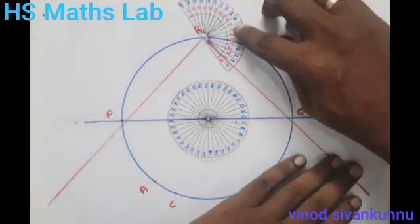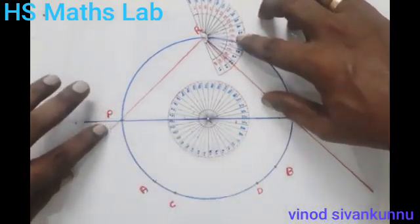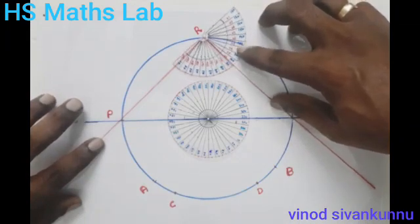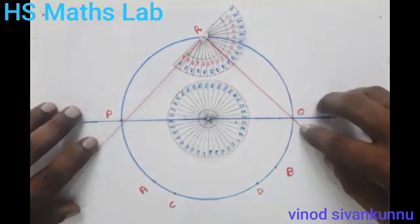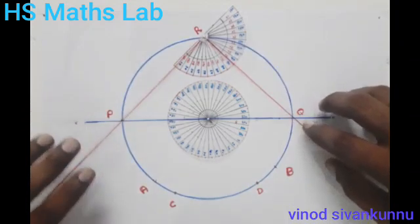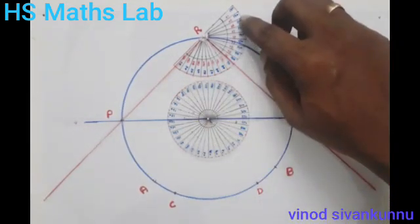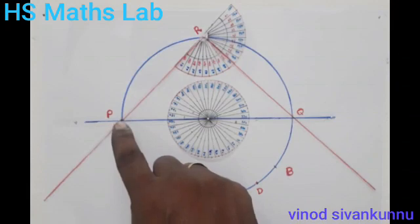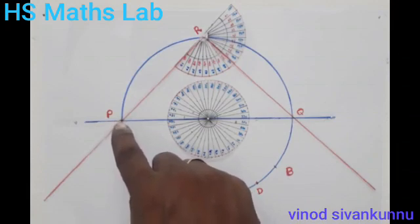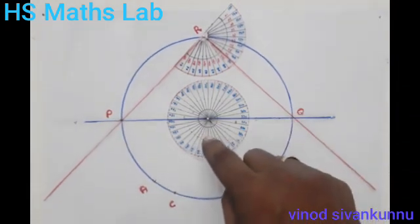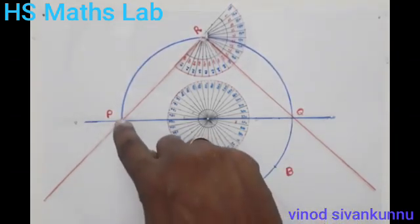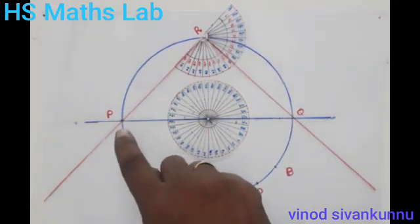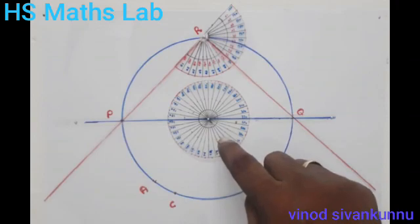We measure the angle PRQ here. If the central angle of the arc PAQ is 180 degrees, then angle PRQ is 90 degrees.